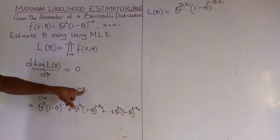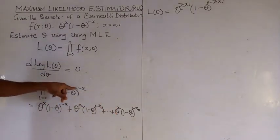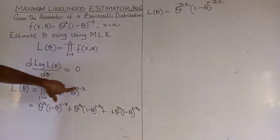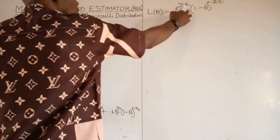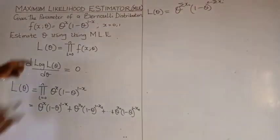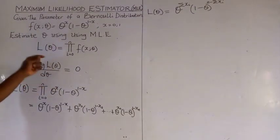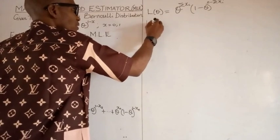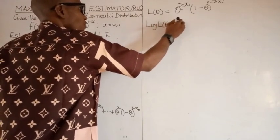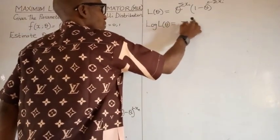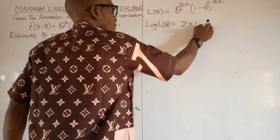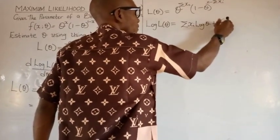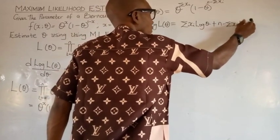This simplification comes from the fact that if you sum all the xᵢ terms you get the summation of xᵢ, and if you sum a constant you get n. We now take the log of this function, because we said to get the MLE we take the differential of the log of the likelihood function and set it equal to zero. So let us take the log first — the log of this likelihood function gives us the log-likelihood.